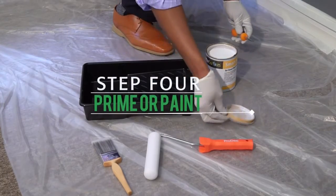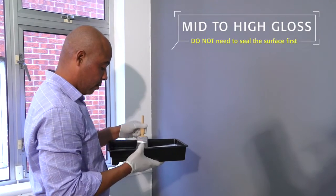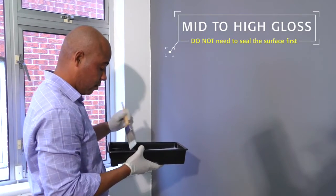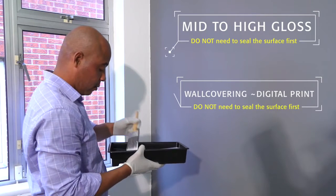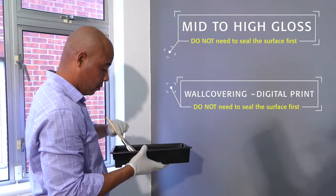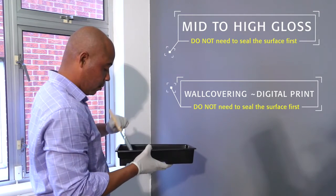Step 4. Prime or Paint. If you are applying SmartWall Paint Clear over a mid to high gloss paint, you will not need to seal the surface first. If you are applying SmartWall Paint Clear over a wall covering, digital print or other non-absorbent wall coverings, do not use a sealer.